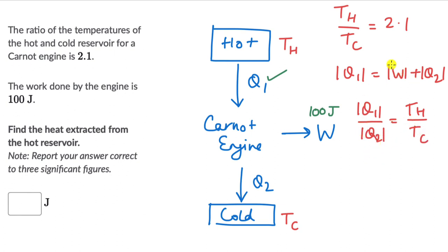Now we already know what W is and we know this ratio TH by TC. So we can relate Q1 in terms of Q2 from the second equation, place that in the first equation and then we can solve for Q1 which is what we need to figure out. So we can write Q2 as Q1 multiplied by TC divided by TH. So that's really 1 divided by 2.1, so this basically gets divided by 2.1.